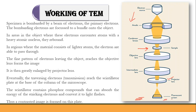The fine patterns of electrons leaving the object reach the objective lens, forming an image that is enlarged with a projector lens. Eventually, the transmitted electrons reach a scintillator plate or fluorescent plate containing phosphor compounds, which absorb the energy of the striking electrons and form a contrasted image on that plate.